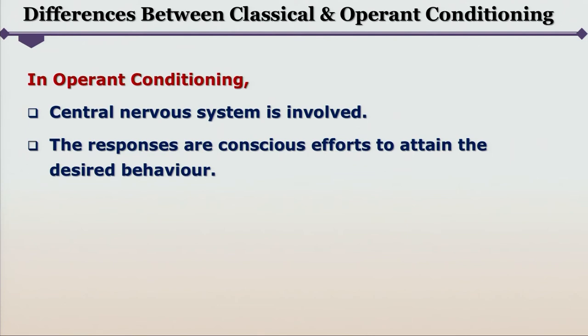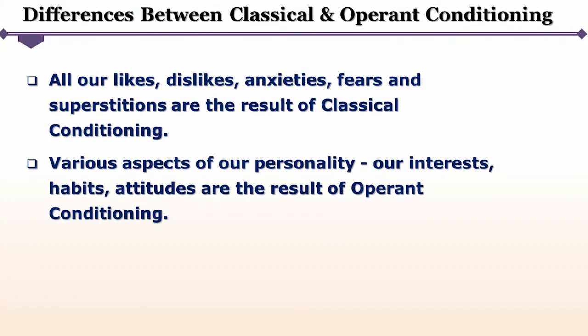In operant conditioning, on the contrary, the organism consciously moves towards the desired behavior defined by the experimenter, as it is controlled by the central nervous system. All our likes, dislikes, anxieties, fears, and superstitions are the result of classical conditioning, whereas various aspects of our personality — our interests, habits, and attitudes — are the result of operant conditioning.